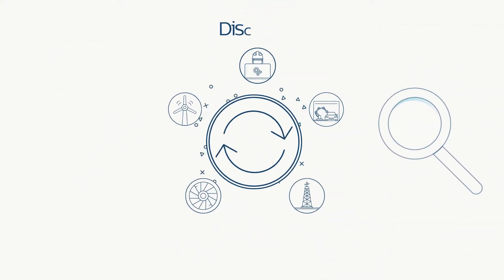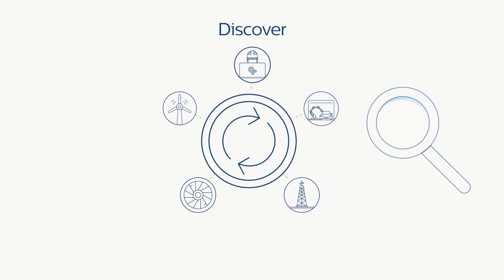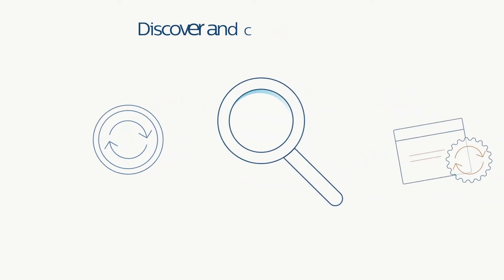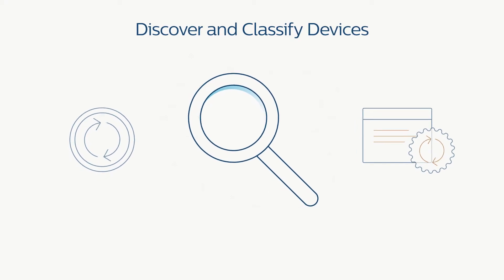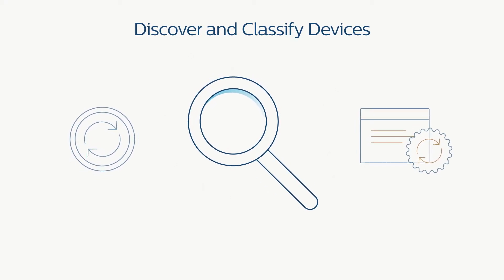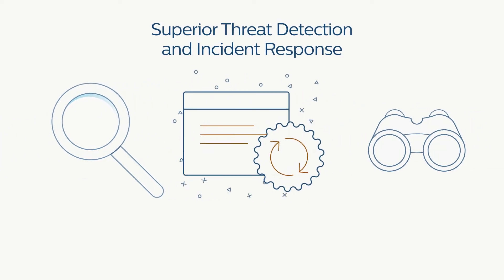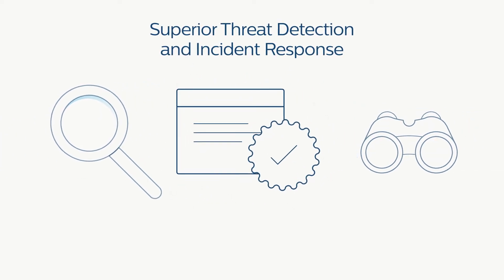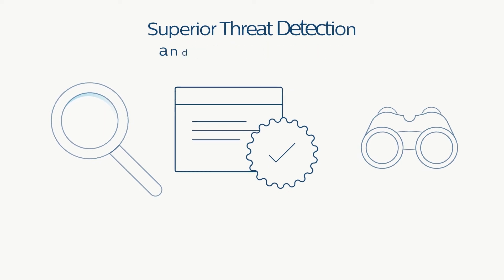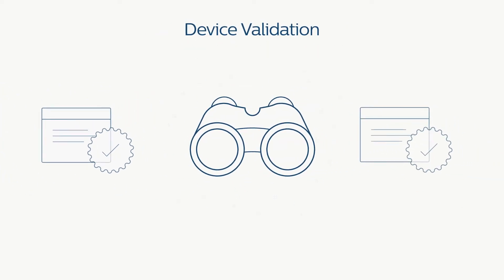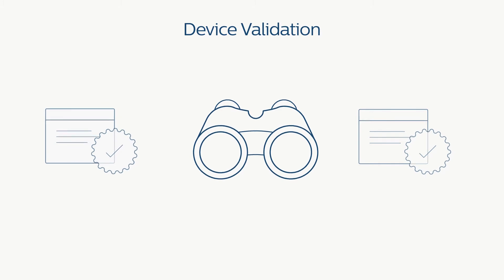Gather critical asset or risk data that doesn't go through the network, even for dormant devices. Collect more context information from devices for quicker incident response and fewer false positives. Should the worst happen and you need to recover, network-only solutions won't have the last good configuration you need.